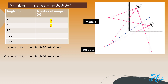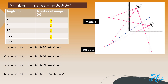When the angle is 60 degrees: 360 divided by 60 equals 6, and minus 1 gives 5 images. When the angle is 90 degrees, we have 3 images. And when the angles are 120 and 180 degrees, we have 2 and 1 image respectively.